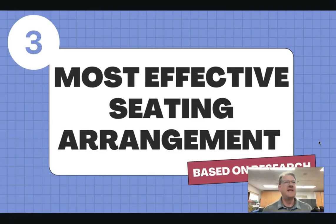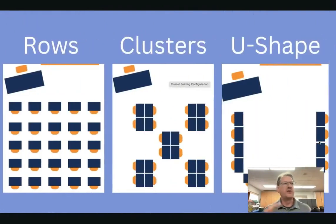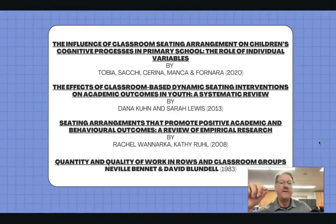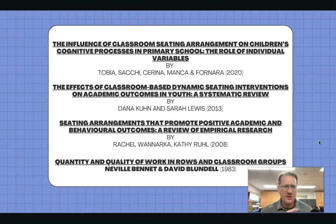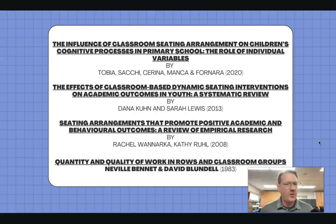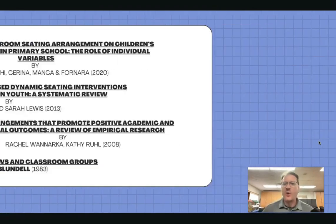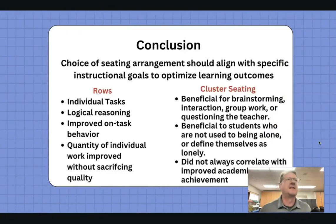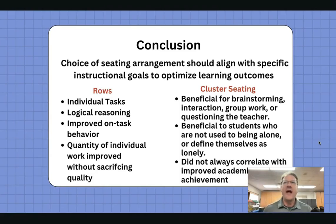Next is the most effective seating arrangement for your class. I looked at rows versus clusters or table groups, and U-shaped arrangements. I looked at multiple studies — documents that only contained studies, not people's opinions. The studies generally all came to this conclusion: the choice of seating arrangement should align with specific instructional goals to optimize learning outcomes. Essentially, the way you arrange your class should be based on what you're doing and what you're trying to accomplish.